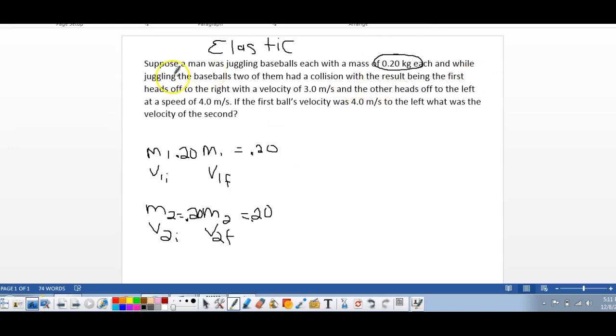And then velocity initial. So they have a collision with the result being the first heads off. So make this the first, this is the second right here. And then so the first heads off to the right and we're going this way, so I'll make that positive. We're going this way, we'll make it negative. So this one's going to be to the right with the velocity.